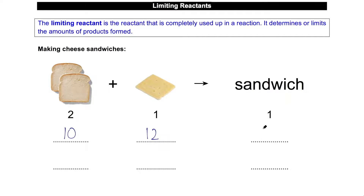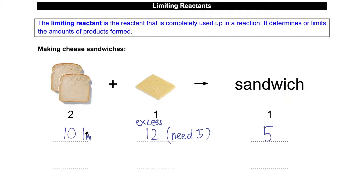Was your answer five? Yes, if your answer is five you are right, because for ten slices of bread I will actually need five slices of cheese, but I have twelve. So we say I have an excess amount of cheese because I only need five. Bread is my limiting reagent because it's not enough. I will use up all my bread and be left with twelve minus five — seven slices of cheese in excess — and my yield will be five pieces of sandwich.